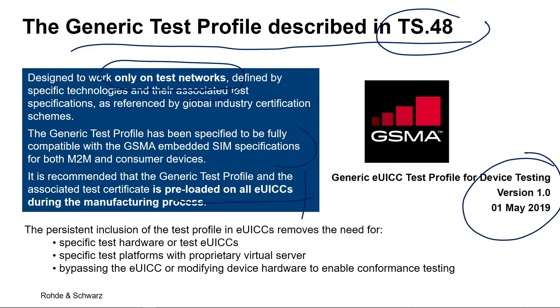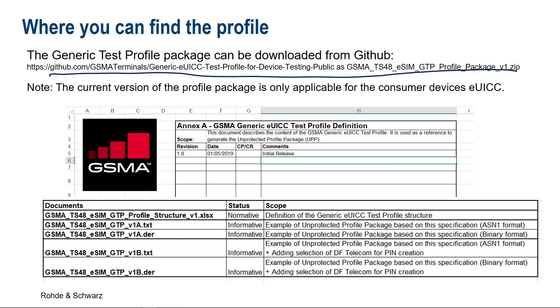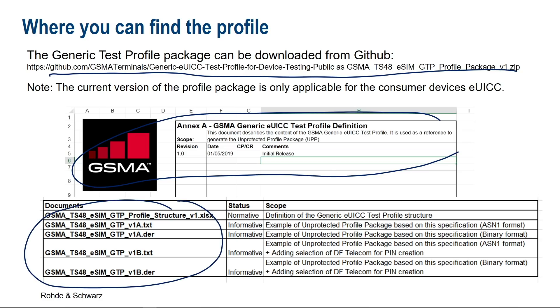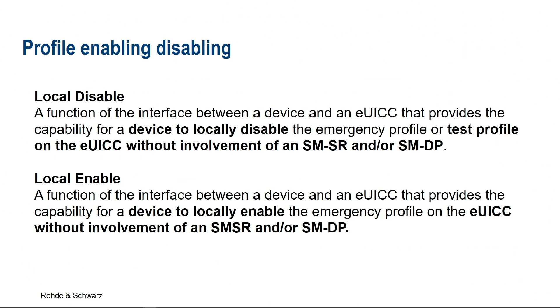All this is defined in this specification. If you would like to look at these profiles, there is a GitHub folder — you can see the link here — where you can find these files. There is for example an Excel file where the descriptions and different profiles are mentioned and you can download the profile. The important question is: the profile is now on the eSIM, hopefully preloaded by the manufacturer — how can I activate this profile? For this, the device via certain interfaces can locally disable and locally enable these profiles without using the full management functionality. By the way, if you switch off the power, the profile is still enabled — I think that's very important and comes up often as a question.